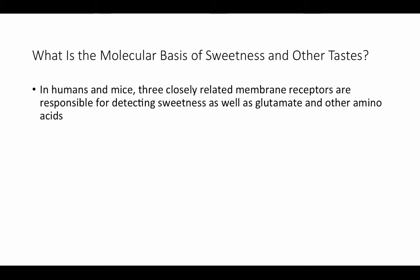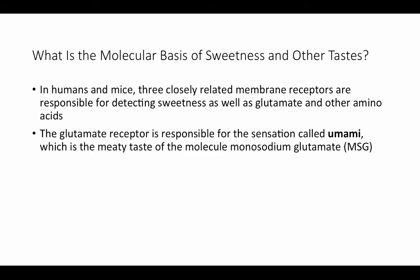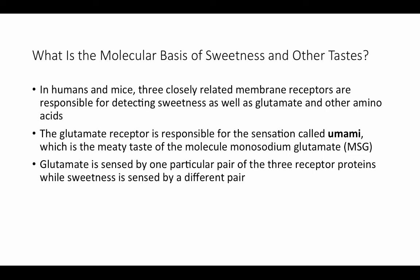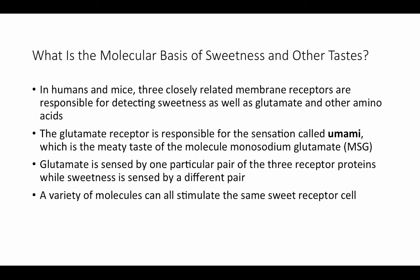What about sweetness and umami? In humans and mice, there are three closely related membrane receptors responsible for detecting sweetness as well as glutamate. The glutamate receptor is responsible for the sensation called umami — the meaty taste of monosodium glutamate (MSG), commonly found as a flavor enhancer in many Asian foods. Glutamate is sensed by one particular pair of the three receptor proteins, while sweetness is sensed by a different pair. A variety of different molecules can all stimulate the same sweet receptor cell through a common binding region.